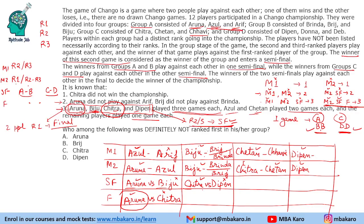In group D, Deepin plays 3 matches. Two other players (Donna and Dev) each play only 1 match. One of them plays in match 1 and the other in match 2, but we cannot determine which of Donna or Dev plays in which position. Deepin wins both group matches and advances to the semi-final.